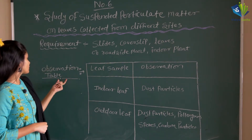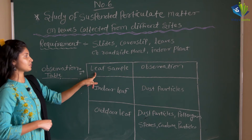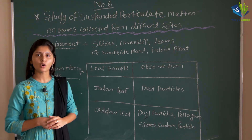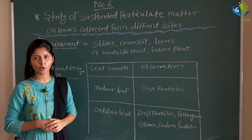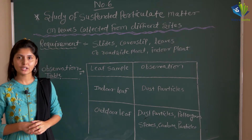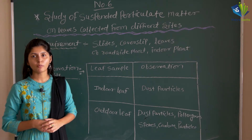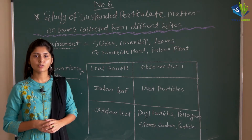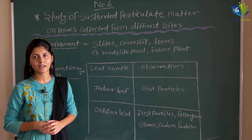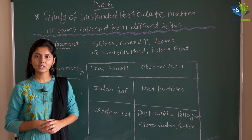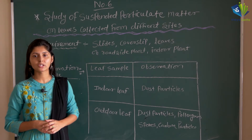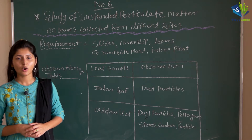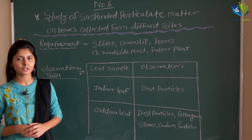For the leaf samples, we have to take the two leaves, wash them under tap water, and once washed, put a drop of glycerin on them. After that, smear the glycerin off onto a slide and observe what particulate matter is present on it.